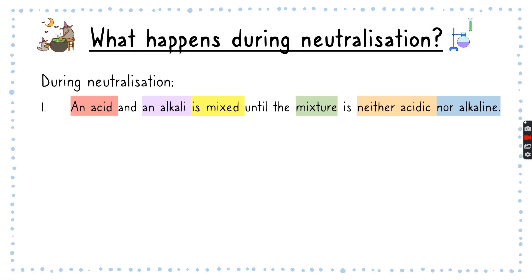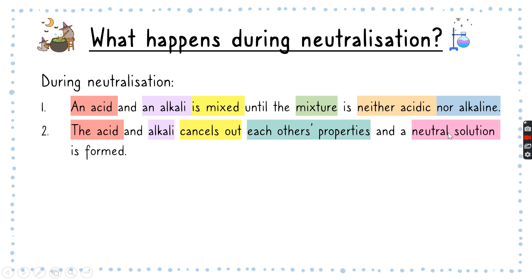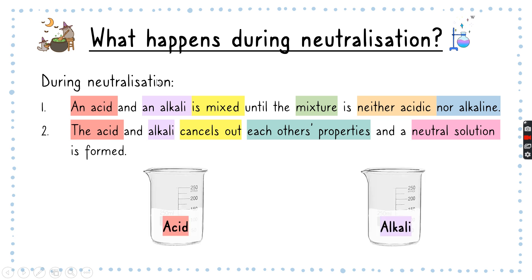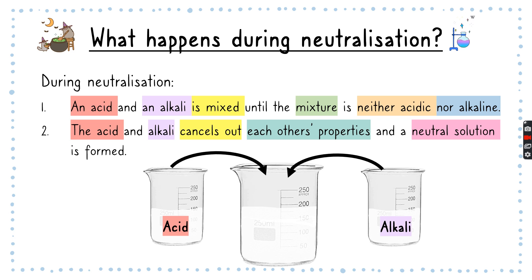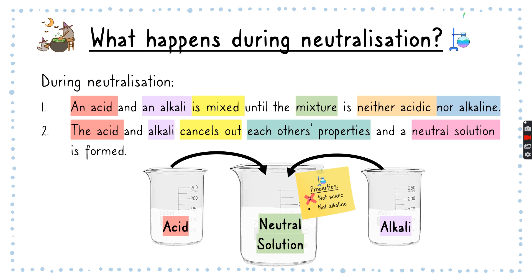What happens during neutralization? An acid and an alkali are mixed until the mixture is neither acidic nor alkaline, and you form a salt plus water. The acid and alkali cancel out each other's properties to form a neutral solution. Remember that acids and alkalies don't always neutralize immediately — you mix them until they are neutralized. The resulting neutral solution will not turn blue litmus paper red, and it will not turn red litmus paper blue.